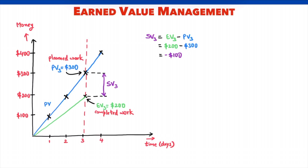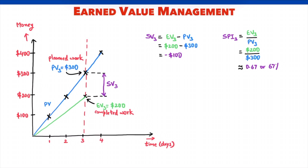Another parameter that tracks schedule performance is the SPI, or Schedule Performance Index. It is approximately 0.67, or 67 percent.